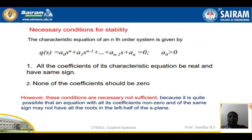Necessary condition for stability. The characteristic equation of an nth order system is given by Q(s) = a0*s^n + a1*s^(n-1) + ... + a(n-1)*s + an = 0, where a0 is greater than 0. All the coefficients of the characteristic equation must be real and have the same sign, and none of the coefficients should be zero. However, these conditions are necessary but not sufficient, because it is quite possible that an equation with all its coefficients non-zero and of the same sign may not have all the roots in the left half of the s-plane.